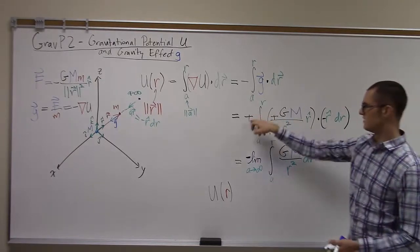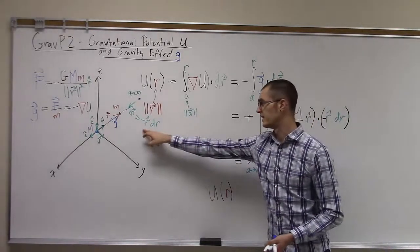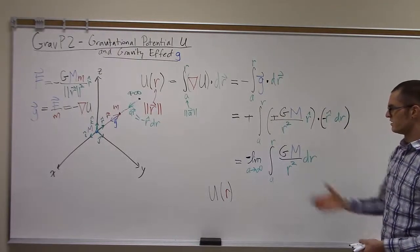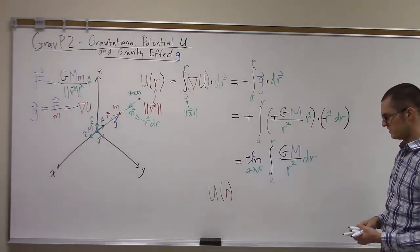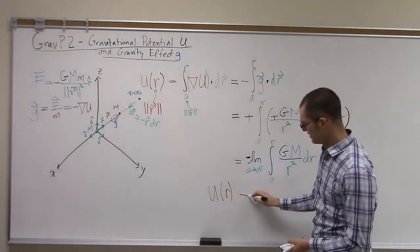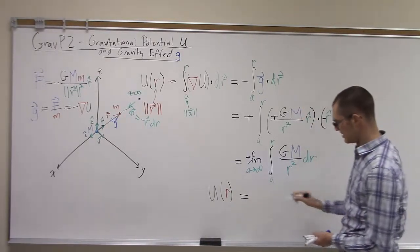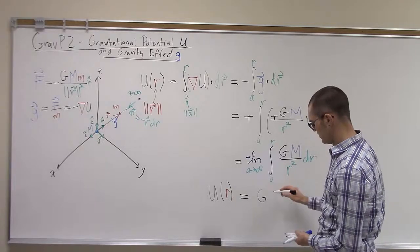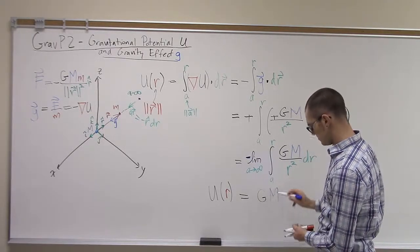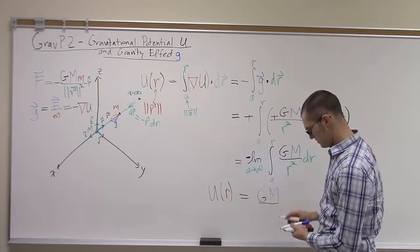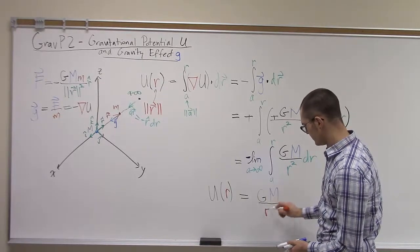So this negative canceled with this one, but we had another negative from the piece of r hat. So now we have a negative sign out front of this. But when we evaluate the integral, we get another negative sign. So ultimately, we end up with just negative GM over r.